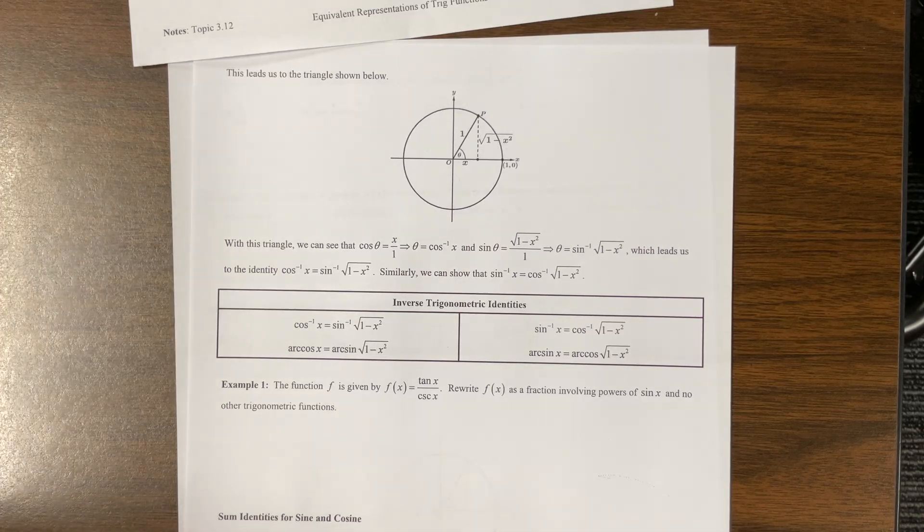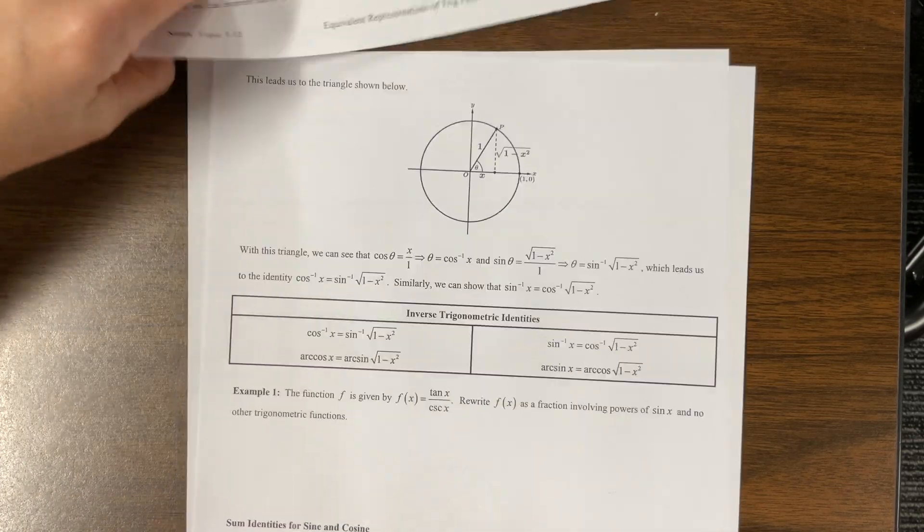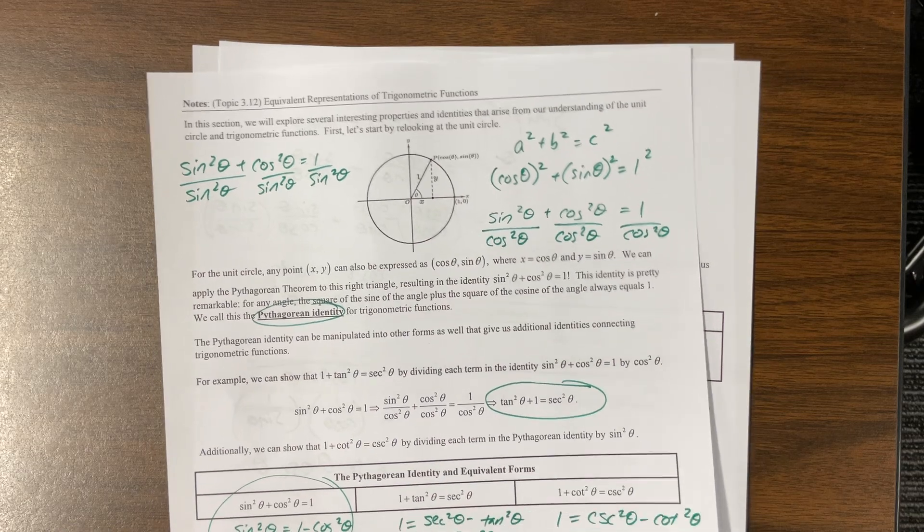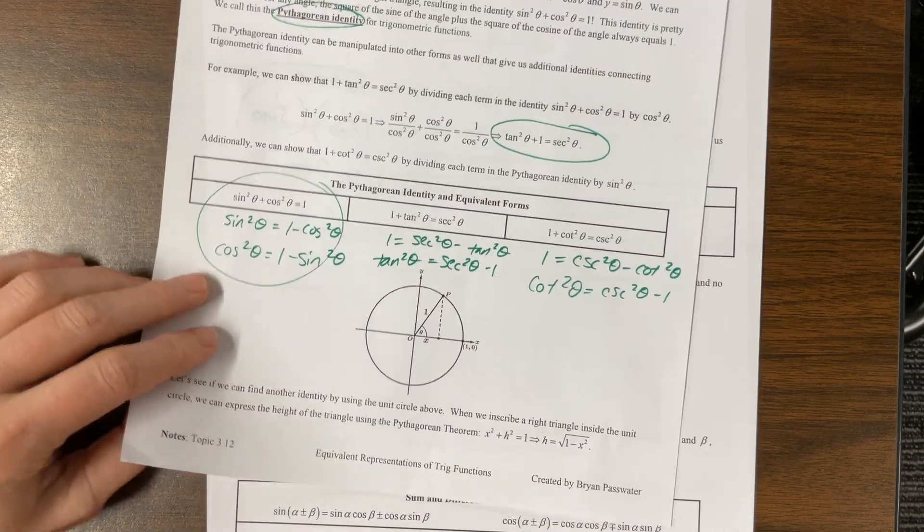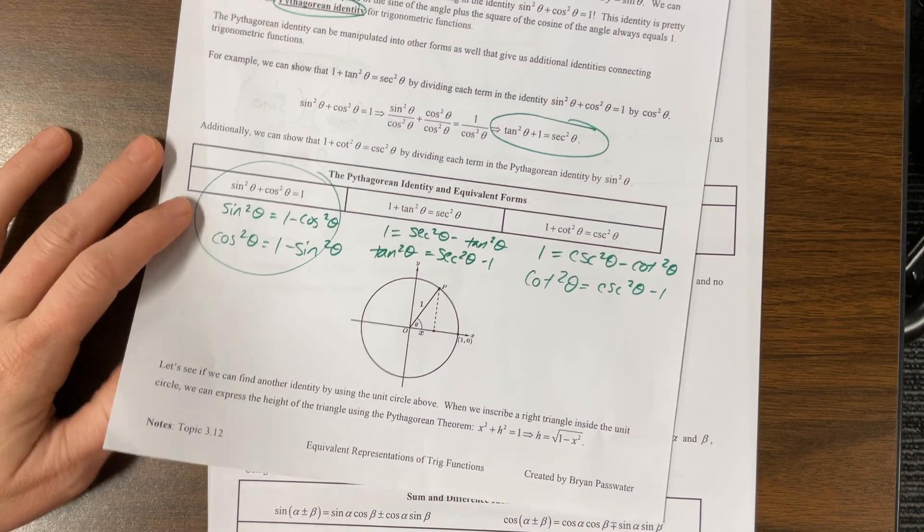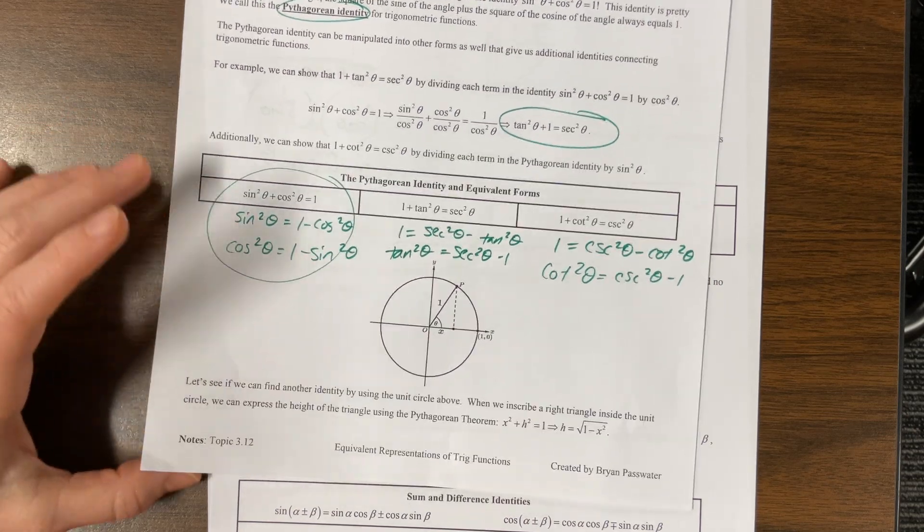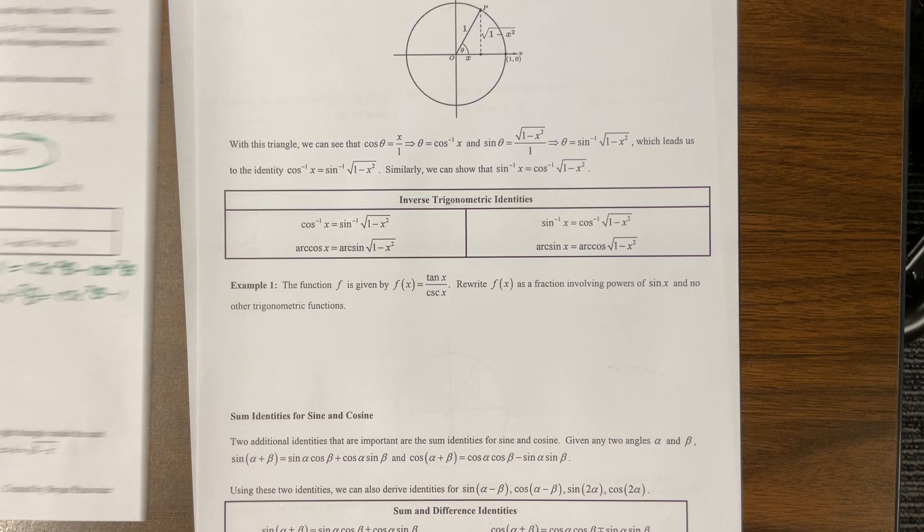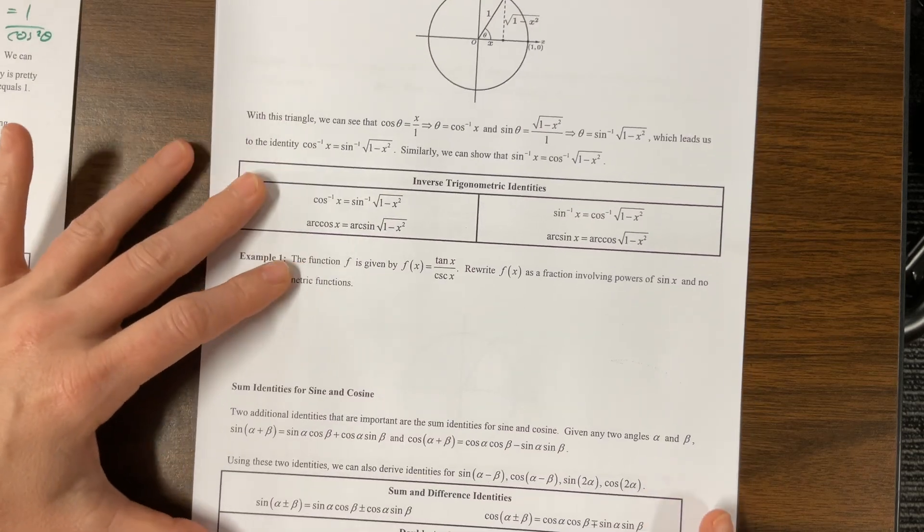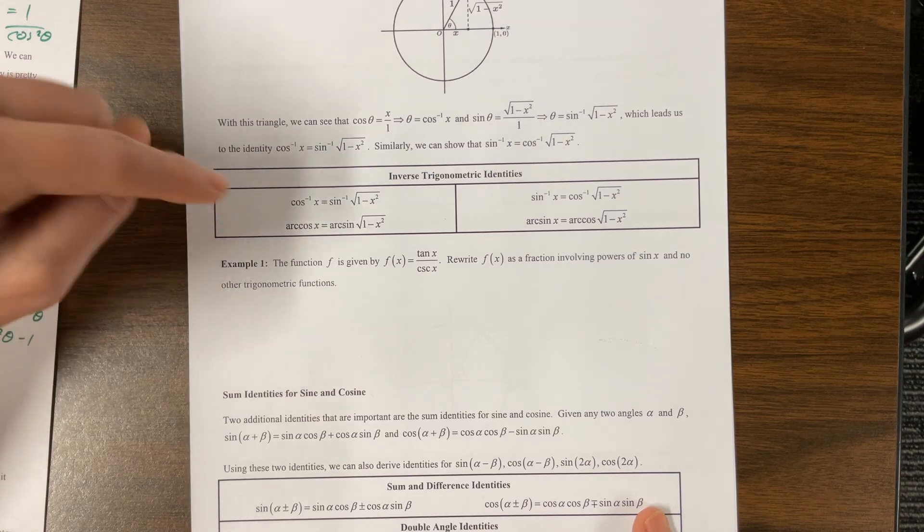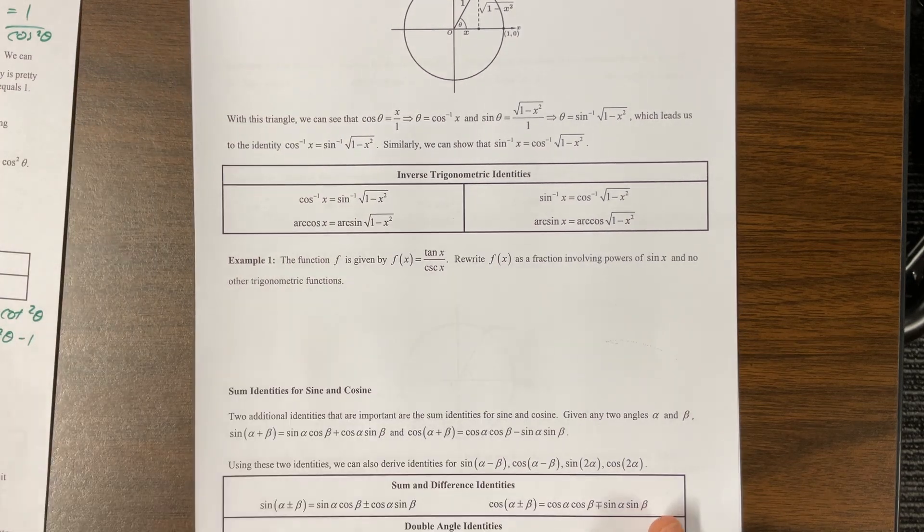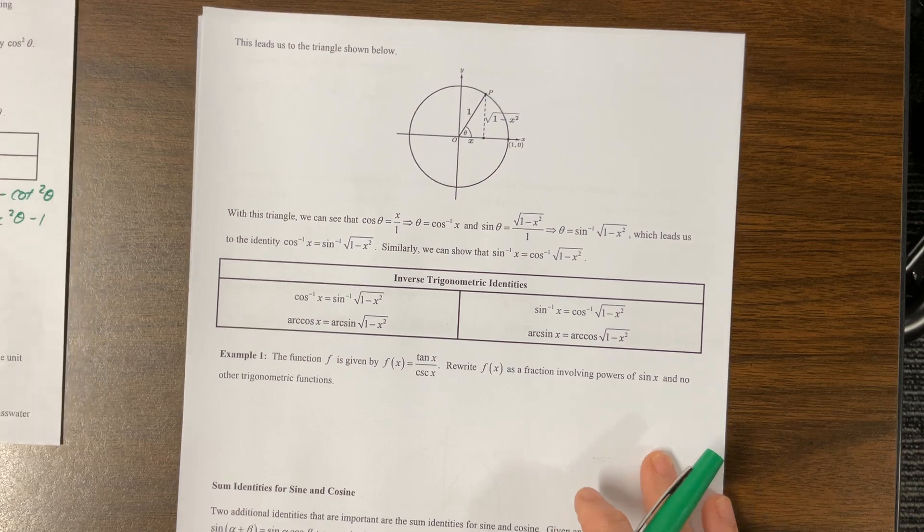Howdy, April Pre-Cal. It is Ms. Kosh. We are continuing the 3.12 notes. So I started with the Pythagorean identities, and then I made up my own example. It's a very common one, so it's not like I'm all that creative. But then I stopped here before getting into the inverse trig identities, and I'm realizing now that I did not teach enough to my kids this year. So we're going to have to go back and figure that out.